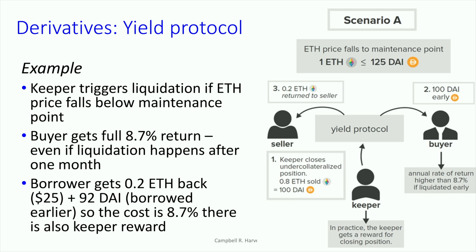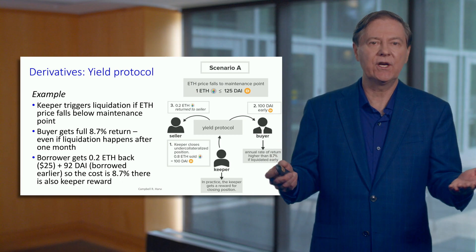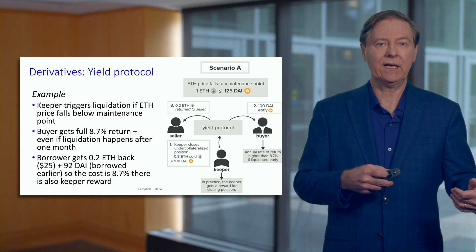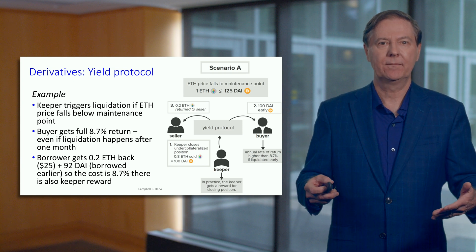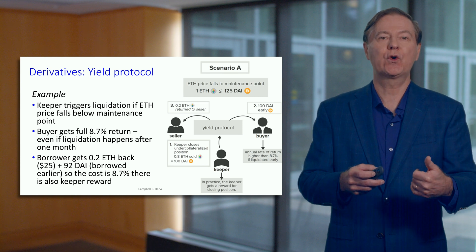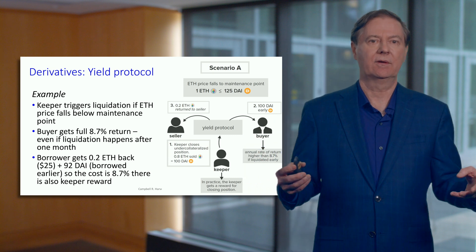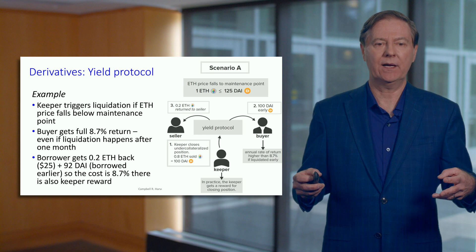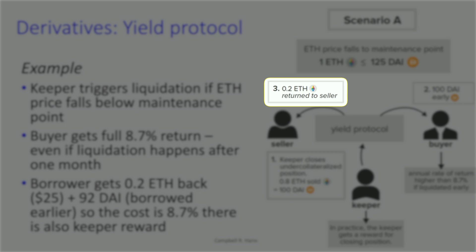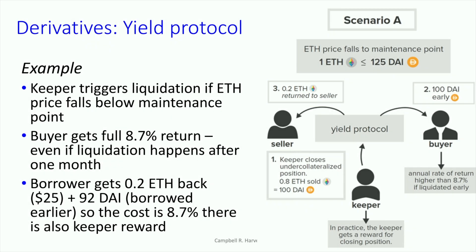Obviously for the seller it isn't a great deal. I'm using 'buyer' in the same way as if buying a zero coupon bond — you buy it for 92, hold for a year, you get 100, so it's 8.7%. There's a liquidation event: the keeper comes in, liquidates, and pays the buyer the 100 early, giving you the 8.7% return over a short period of time. Annualized, that rate of return is much greater than 8.7%. The borrower gets back 0.2 Ether, since only 0.8 Ether was used to pay back, but there's also a keeper reward that eats into that refund.